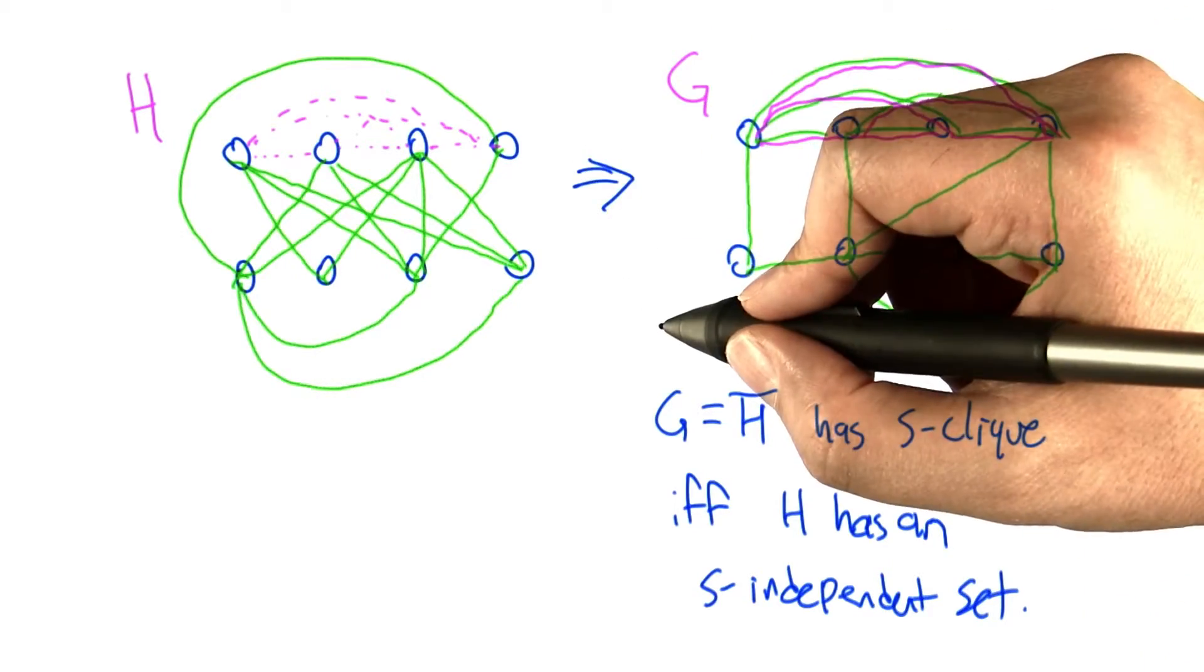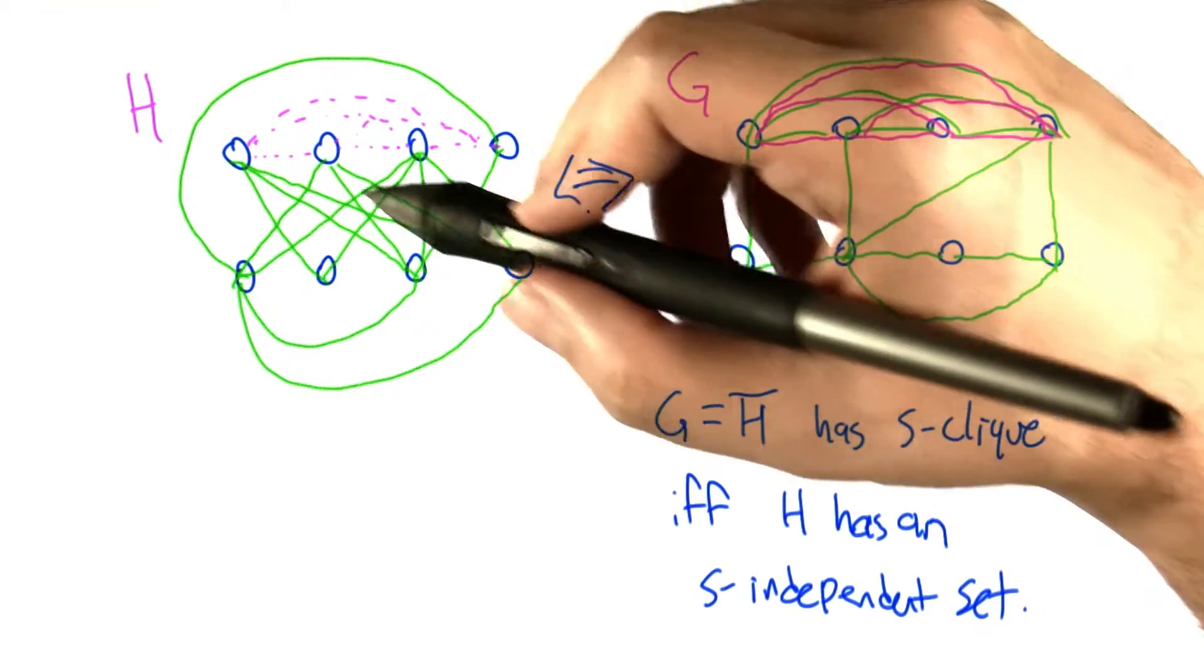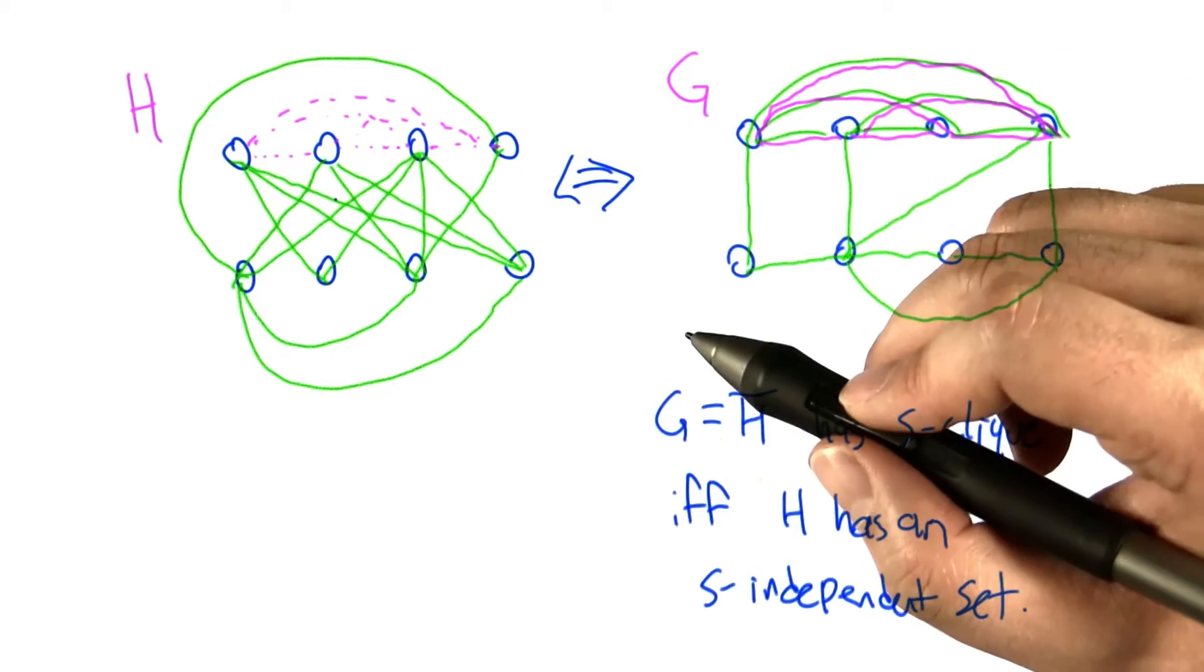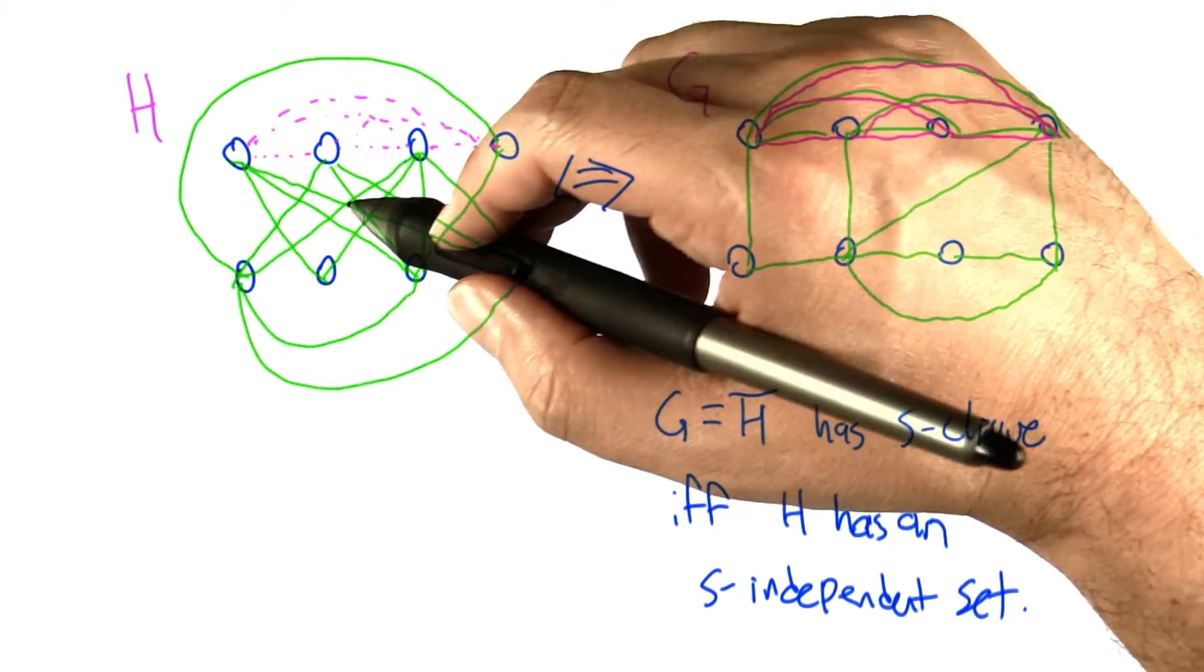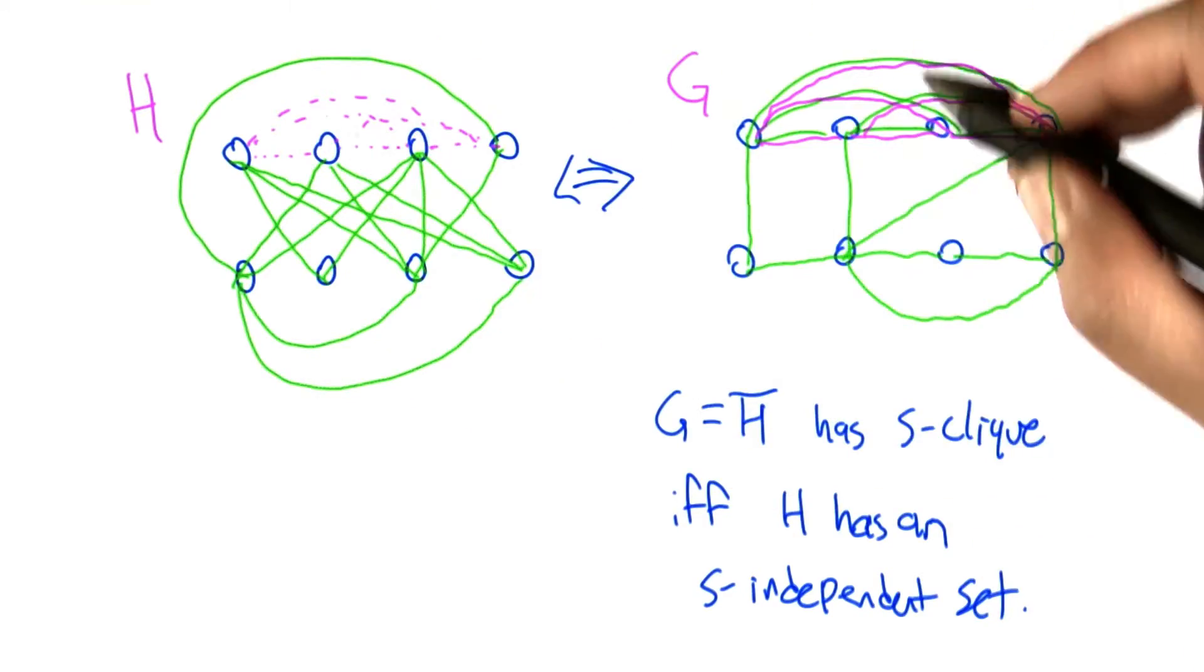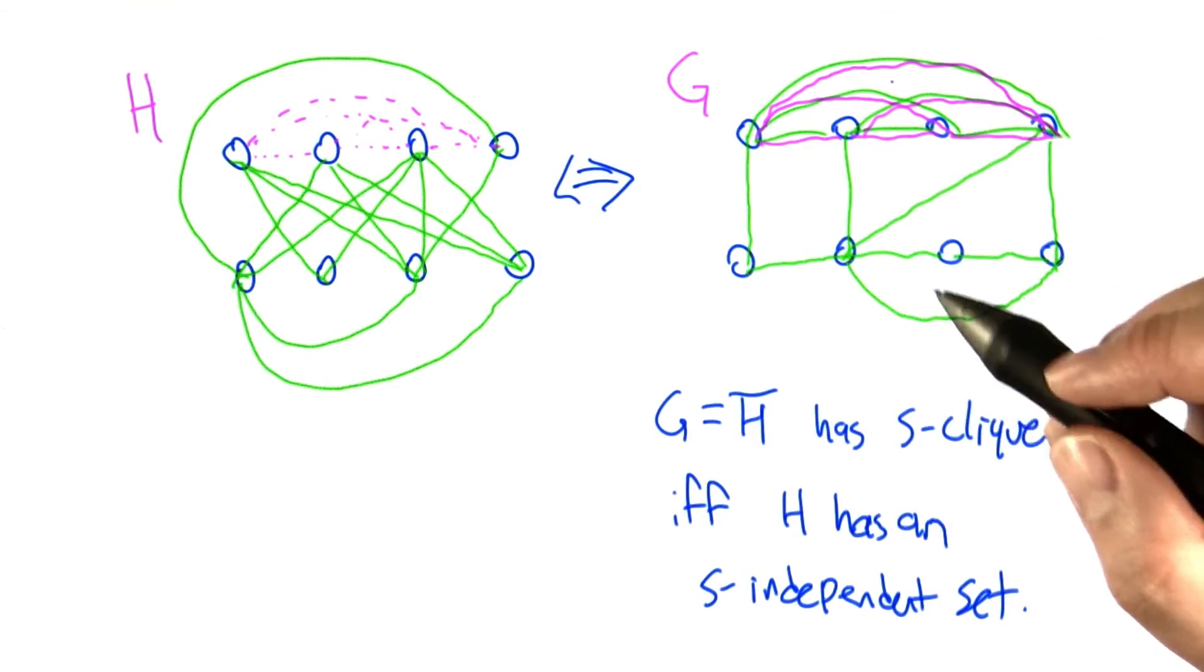This one actually is also really easily reversed, right? So if we have an algorithm for independent set, we could use that to solve the clique problem the same way. Invert the graph, complement the graph, look for the independent set, and that tells us what the clique is in the original graph.